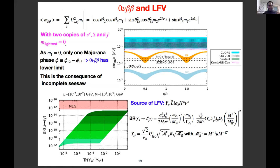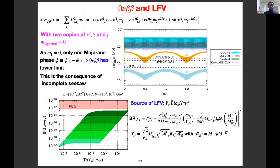If we consider only two copies of N, C, S, and F, then one of the light neutrinos will be massless, and there is effectively only one Majorana phase playing a role in neutrinoless double beta decay. In that case you can have a lower bound both for normal ordering and inverted ordering. The lepton flavor violation is the same as in the low-scale seesaw, and by adjusting the mu parameter you can have large values of lepton flavor violation.